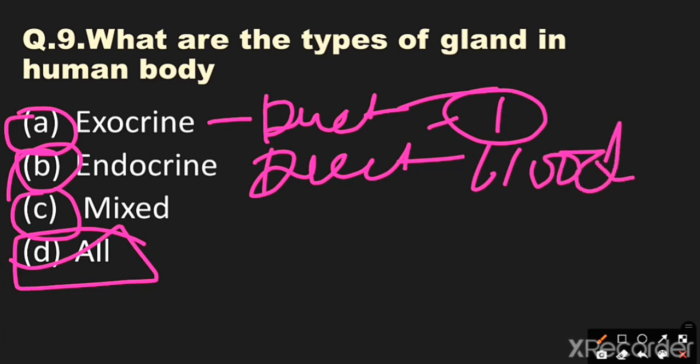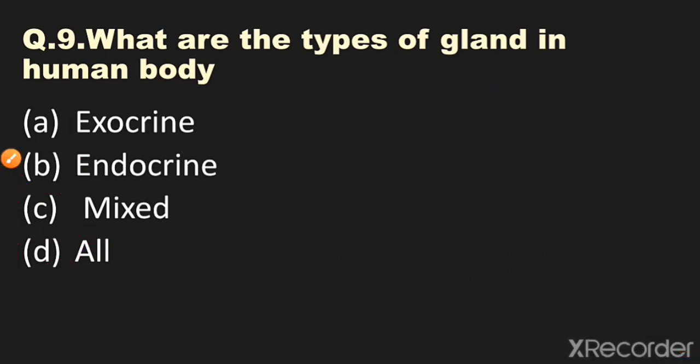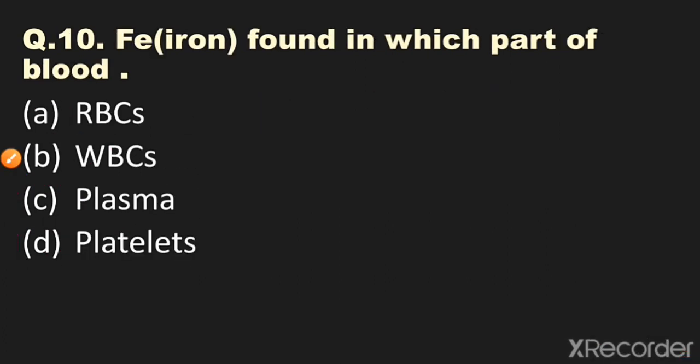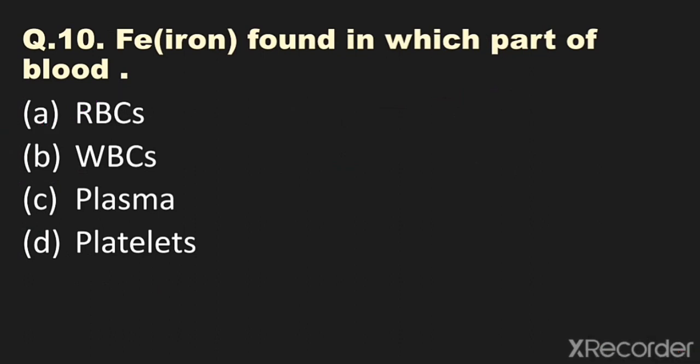Question number ten: Iron is found in which part of the blood? Options: A) RBCs, B) WBCs, C) plasma, D) platelets. The answer is RBCs — iron is found in red blood cells.